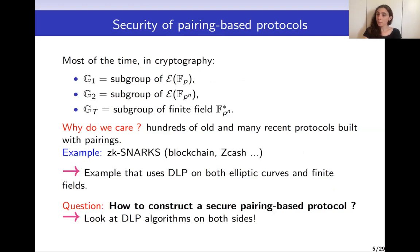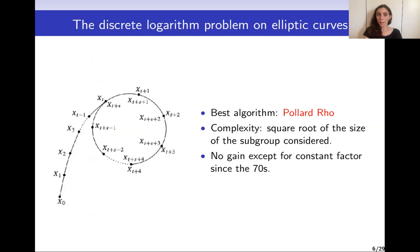Pairings are an interesting example not only because they are used in many protocols, but also because they use the discrete logarithm problem on both elliptic curves and finite fields. The best-known algorithm for DLP on elliptic curves is Pollard rho, which has complexity in the square root of the size of the subgroup being considered. Not much more is said here because there have not been many major gains in complexity regarding DLP on elliptic curves in the past few decades.